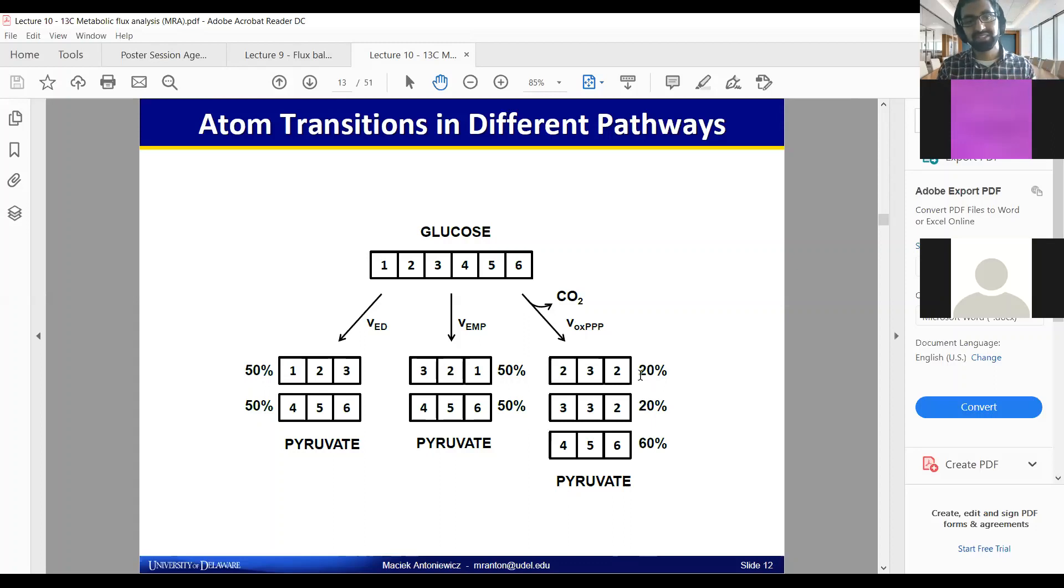The rest of the slide deck is going to make a lot of the same points as we just got to here. This is effectively how you can then use 13 carbon labeling to tell apart and not just tell apart, but to deconvolute and account for how much flux went through each of those pathways if they're all on at the same time.